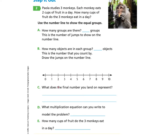Please turn to page 63, under Step It Out, question two. Paolo studies three monkeys. Each monkey eats two cups of fruit in a day — so this is in one day. How many cups of fruit do the three monkeys eat in a day? It also asks us to use a number line to show the equal groups.